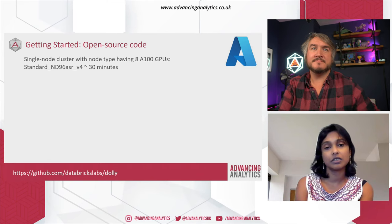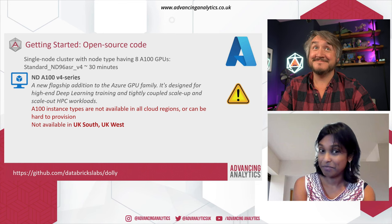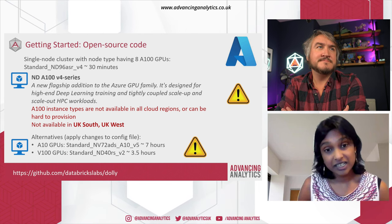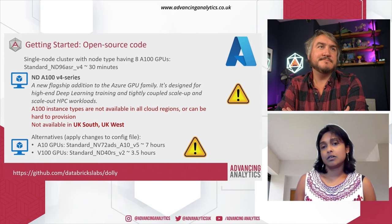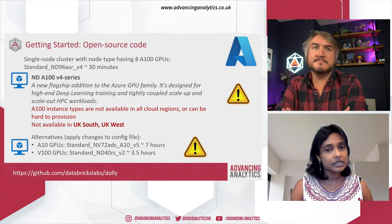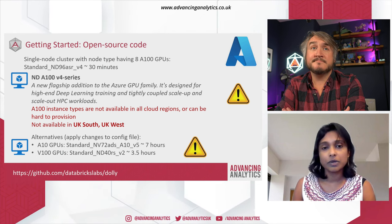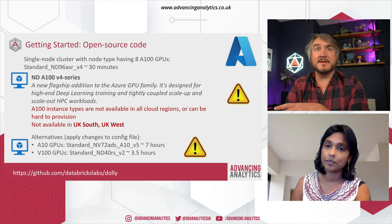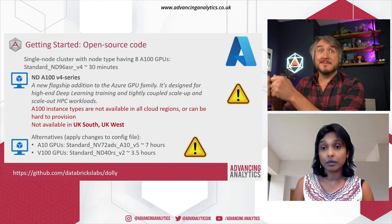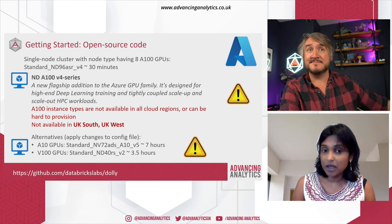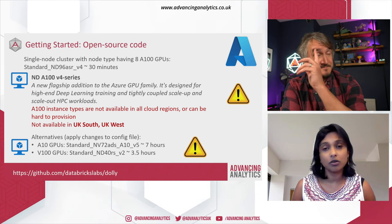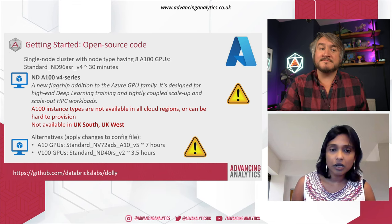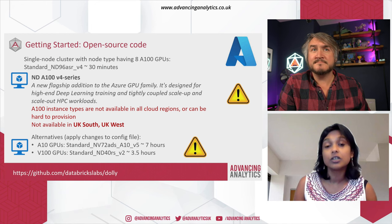There are also other limitations: the GPUs required are not available in UK South and UK West, so you need to spin up your resources in South Central US and a few other regions. You need to make sure whatever cluster you spin up — specifically the A100 — is available in the region you're using. But this is just for training the model; you could spin up compute somewhere, train the model, and post it somewhere closer to your data for ongoing inference. Databricks have also come up with alternatives — if you can't get A100s, you've got A10s and V100s.